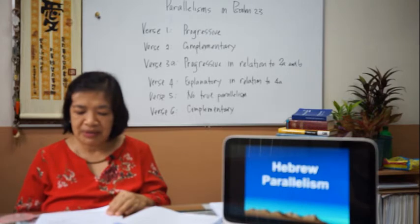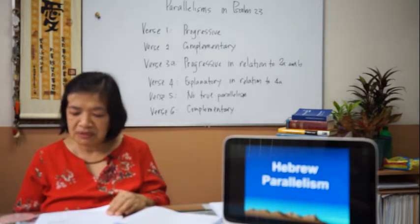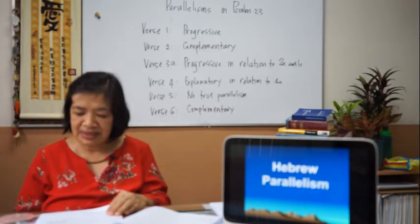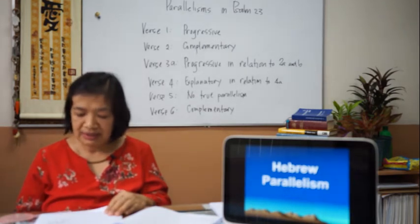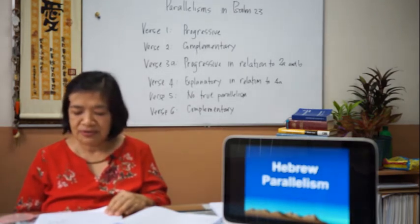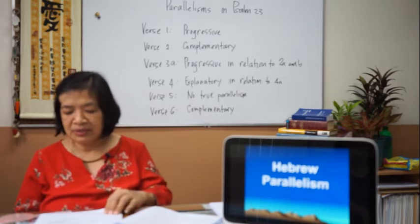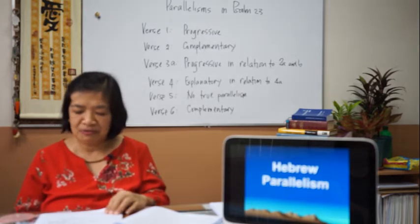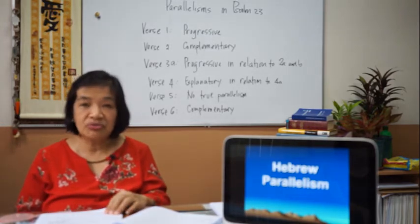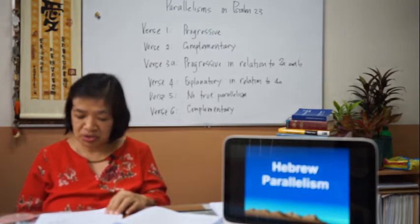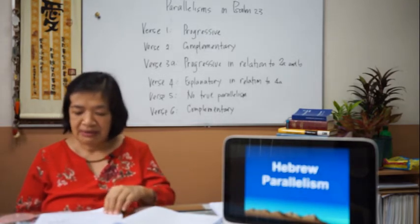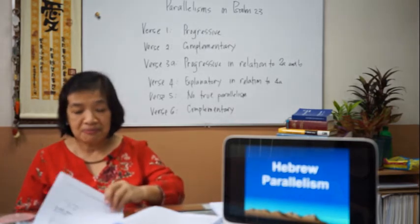Then chiastic parallelism: the order of terms in the first line is reversed in the second line. 'Proclaim in Judah and in Jerusalem — announce.' So proclaim and announce are paired, and the places Judah and Jerusalem are reversed — Jerusalem being the capital of Judah.